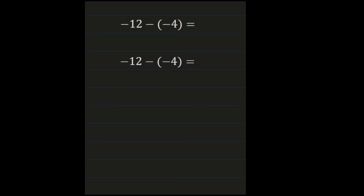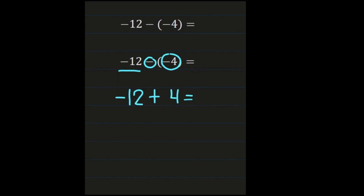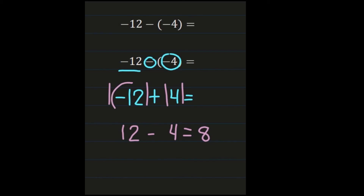For our final example, we have negative twelve minus a negative four. We keep the sign of the first number, so negative twelve stays negative twelve. We change our subtraction sign to addition. Then for our second number, the negative four, we change the sign, so negative four becomes a positive four. From there, we're adding integers with different signs, so we look at our absolute values. The absolute value of negative twelve is twelve, and the absolute value of four is four. We subtract: twelve minus four is eight. We go back to the number with the largest absolute value — negative twelve — so our answer is negative eight. Negative twelve minus a negative four equals negative eight.